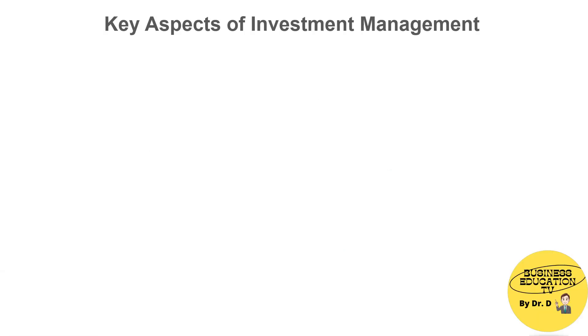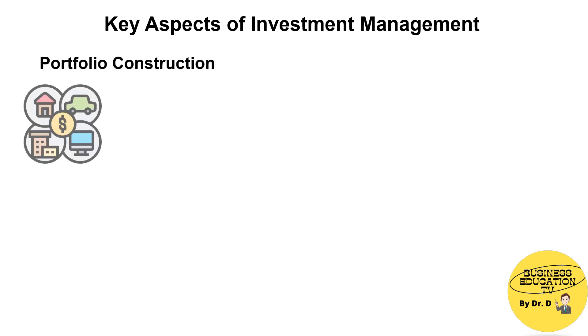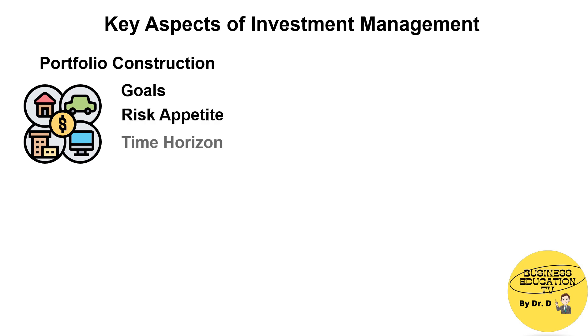There are key aspects of investment management. First is portfolio construction. It involves asset allocation based on the goals, risk appetite, and time horizon of the investor.